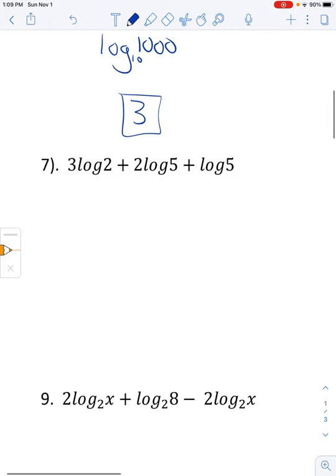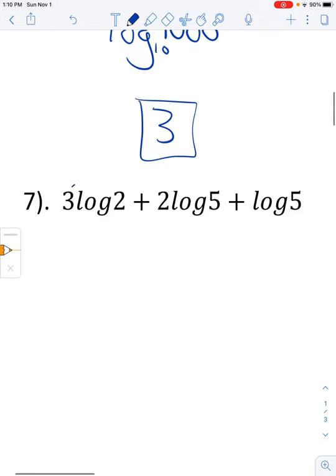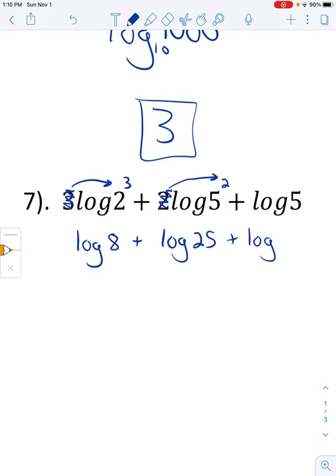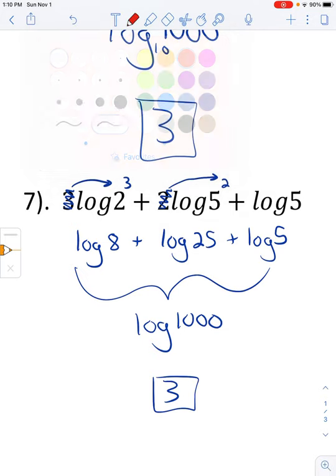So when we have leading terms, or leading coefficients, I should say, we can use the power property and bring them back up here to the top as exponents. So what we have now would be log of 8 plus the log of 25 plus the log of 5. All of this turns into the log of 8 times 25 is 200 times 5 is 1,000. So once again, we have an answer of 3 because 10 to the power of 3 is 1,000.